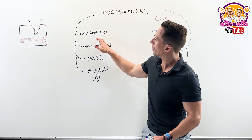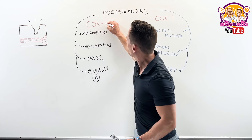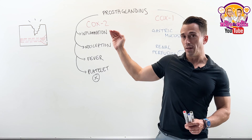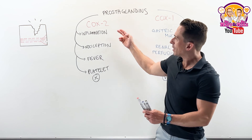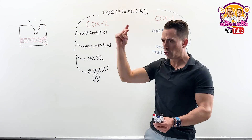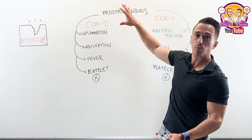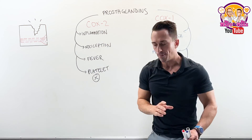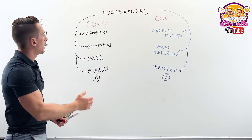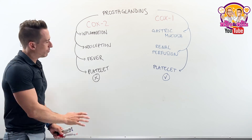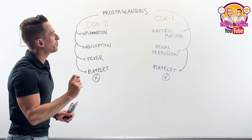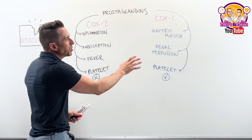What about the enzyme that performs the inflammatory functions? It's called COX-2. And this is not constitutively activated — it's inducible. When do you think this one's activated? In times of tissue damage. When the tissue is damaged, COX-2 kicks in and produces the prostaglandins that drive inflammation, pain, and fever. At the end of the day, what we want to do is inhibit this — the stuff that makes life unpleasant.